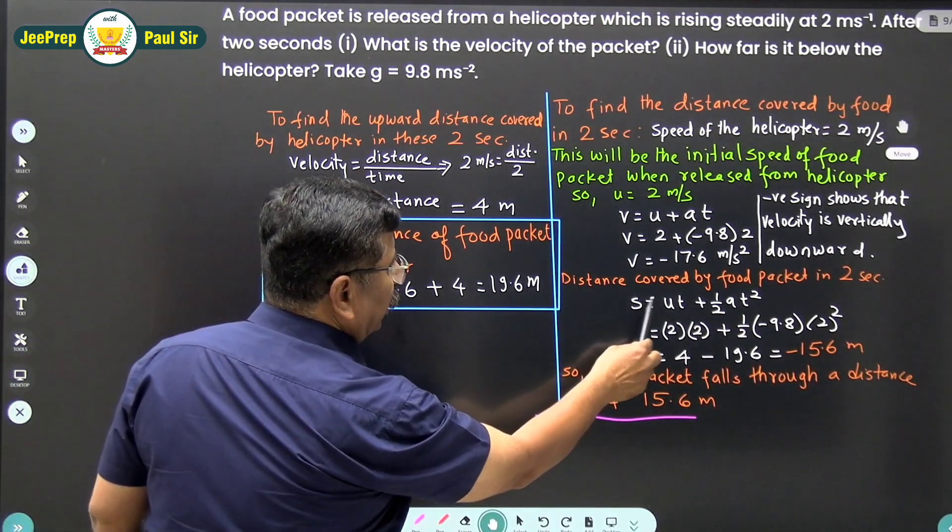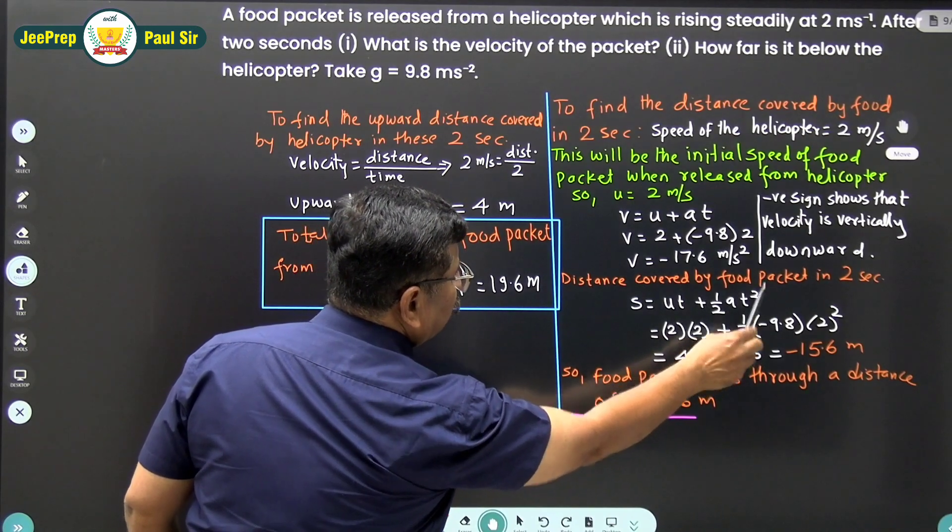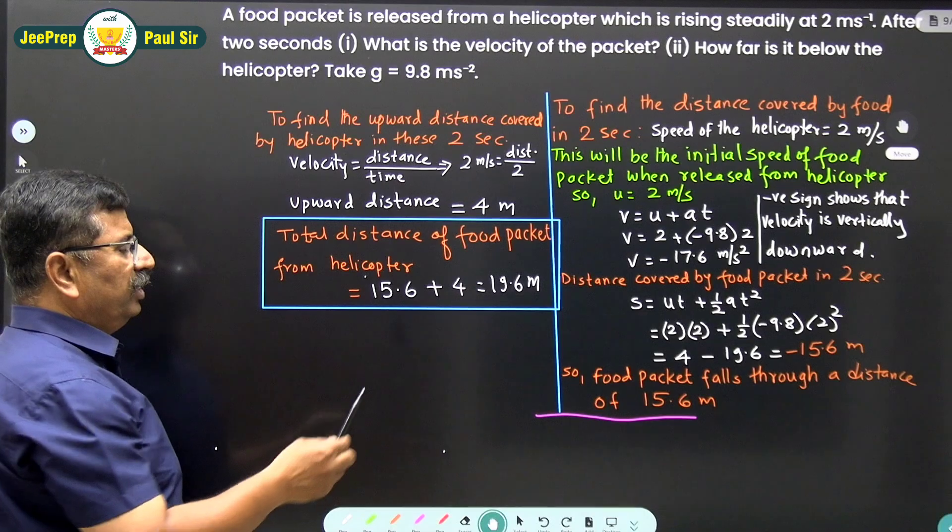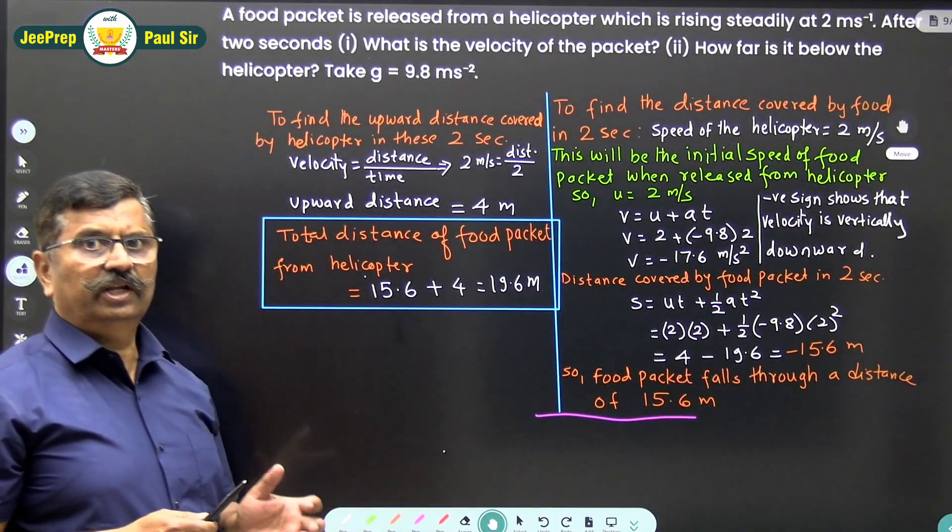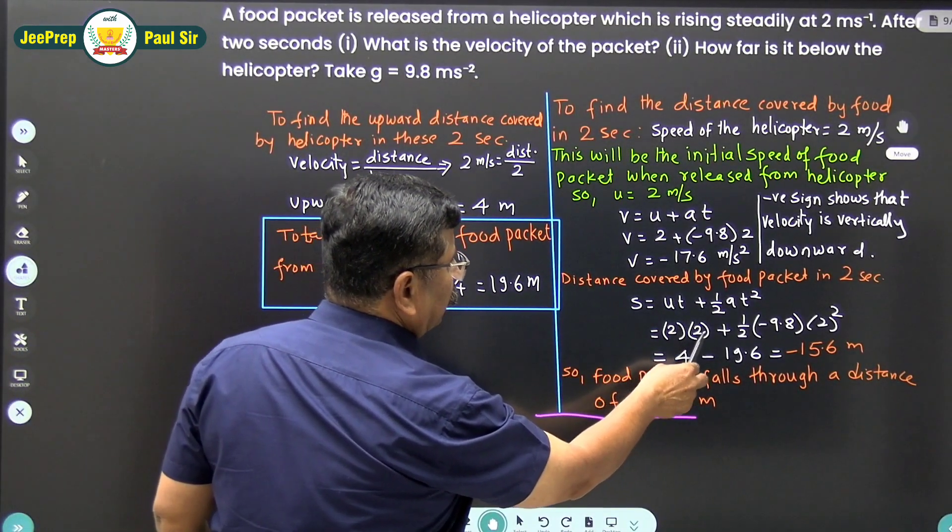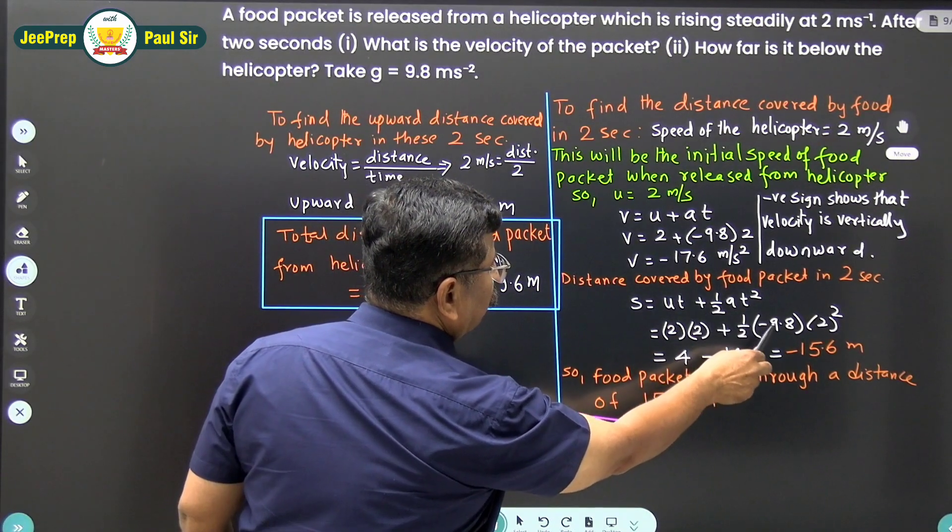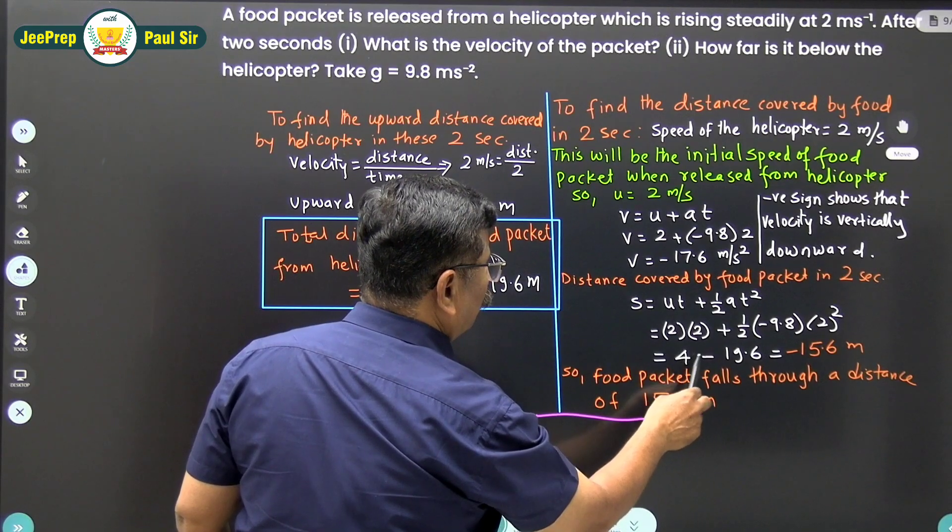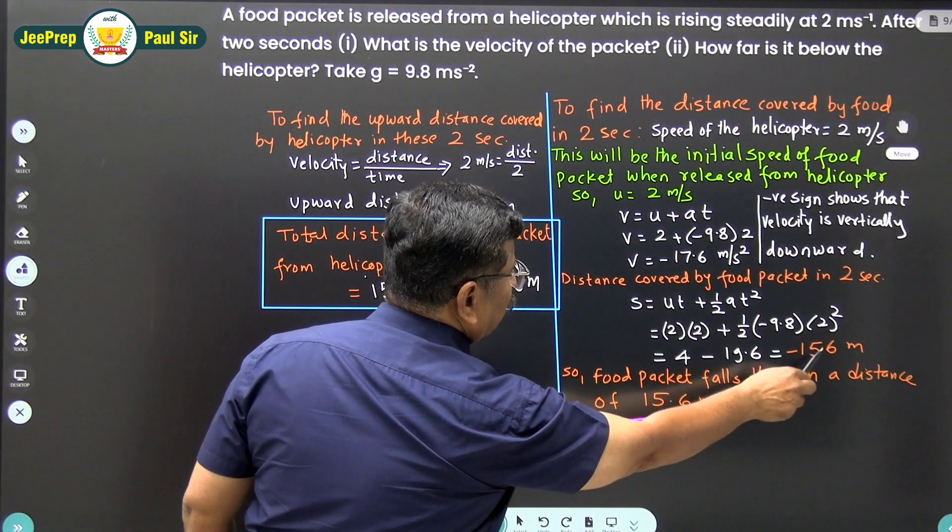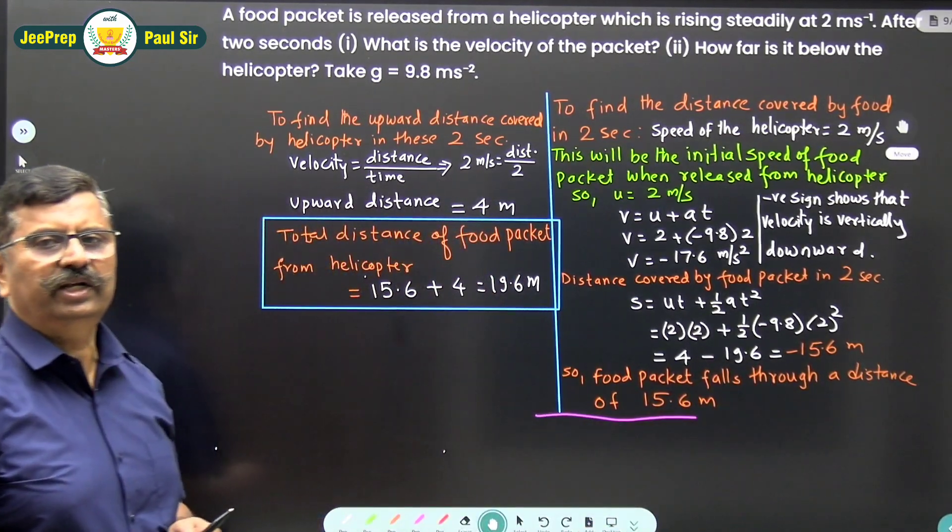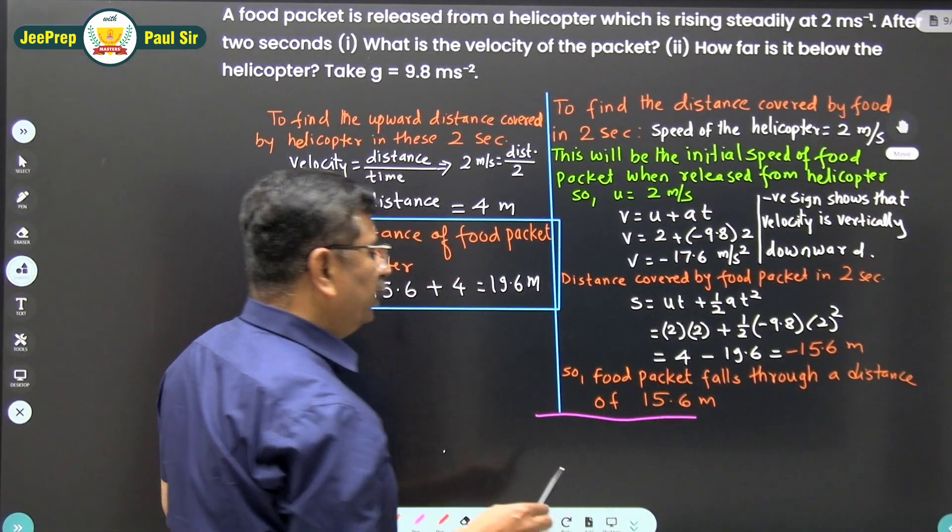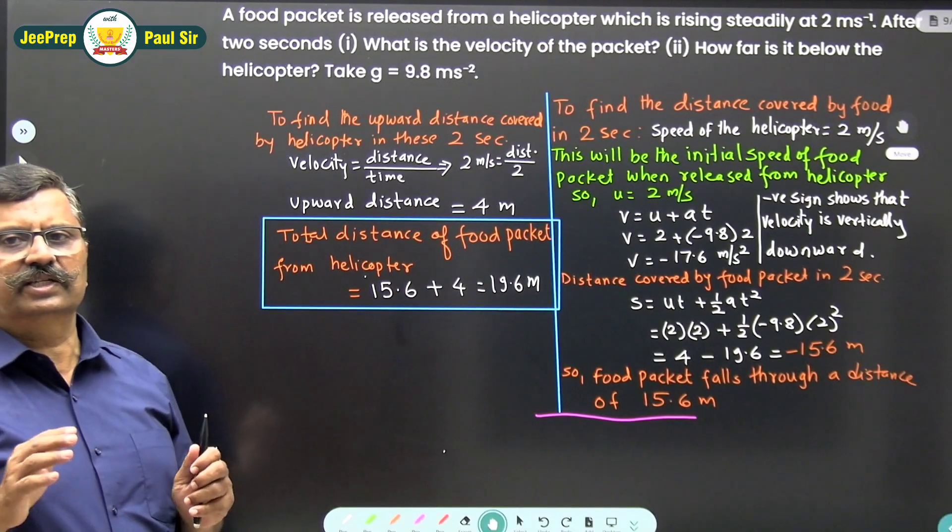We will use the formula S = ut + ½gt². u is the initial velocity, 2 m/s, which is the velocity of the helicopter. Time is 2 seconds. So S = 2(2) + ½(-9.8)(2²) = 4 - 19.6 = -15.6 m. The food packet falls through a distance of 15.6 meters.